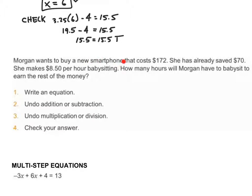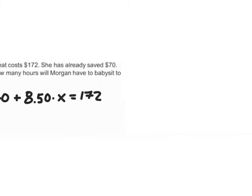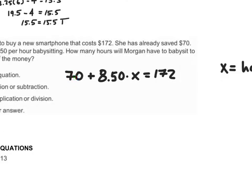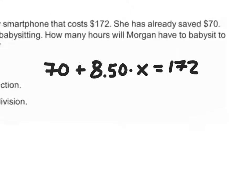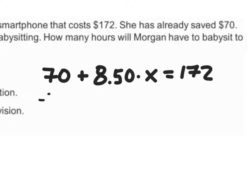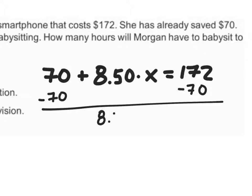Morgan wants to buy a new smartphone that costs $172. She has already saved $70. She makes $8.50 per hour babysitting. How many more hours will Morgan have to babysit to earn the rest of the money? We already have $70, and if we add 8.50 times x, that would give us $172, where x represents hours. So: 70 plus 8.50x equals 172.